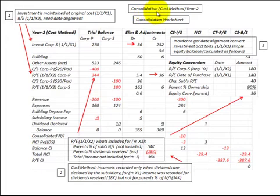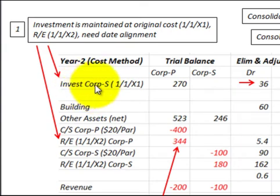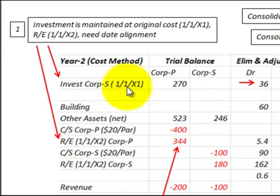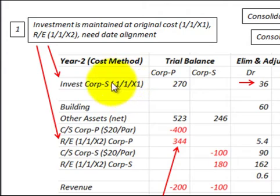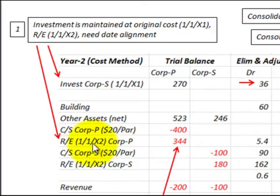Now we're looking at the consolidation using the cost method for year two after the acquisition. This procedure could be used for any subsequent years — three, four, five, and so on — using a consolidation worksheet. The first thing we have to do is align our investment account — the parent's investment in the subsidiary corporation — with the equity accounts for the parent and the subsidiary. Under the cost method, the investment account is maintained at its original cost, which in this case was January 1st of X1.